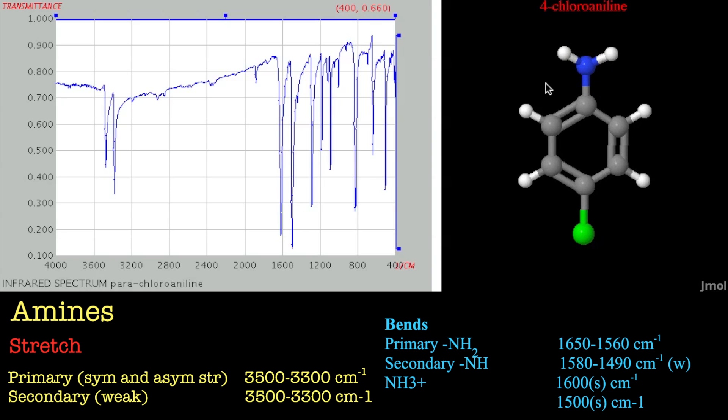One thing to note with this, we don't have any aliphatic CHs, which is really useful actually for this tutorial in particular because it clears all this region. We've also got this carbon-chlorine bond because it's 4-chloroaniline and that's an emily compound.